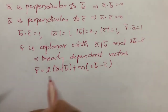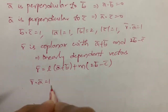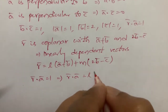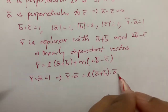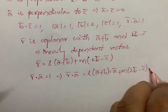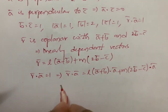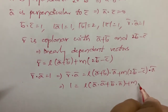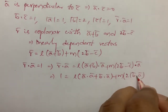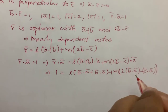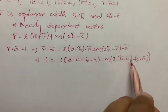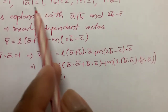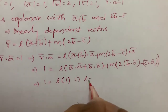We can say these three are lying in a plane. It is given that r bar dot a bar is equal to 1. So if I apply dot product with a here: r dot a = l times (a bar plus b bar) dot a bar plus m times (2b bar minus c bar) dot a bar. This gives 1 = l times (a dot a + b dot a) + m times (2 b dot a minus c dot a). Since a dot b = 0 and a dot c = 0, we get 1 = l times magnitude of a squared = l times 1. So l is equal to 1.